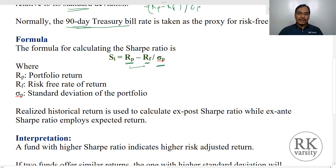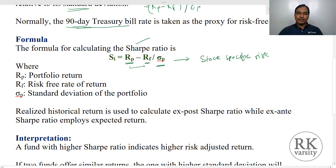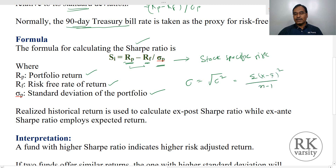While calculating a Sharpe Index, the standard deviation is used as the denominator. The standard deviation represents the unsystematic risk or stock-specific risk — that is the individual risk of a particular stock. In the formula, RP is the return of the portfolio, RF is the risk-free rate, and the denominator is the standard deviation of the portfolio, which equals the square root of variance: the square root of the summation of (x minus x-bar) squared divided by (n minus 1).